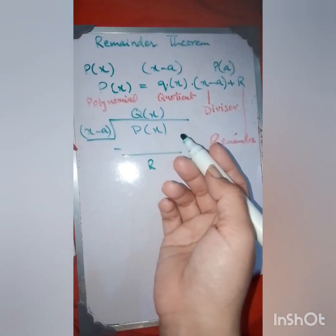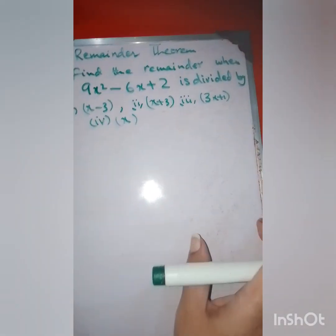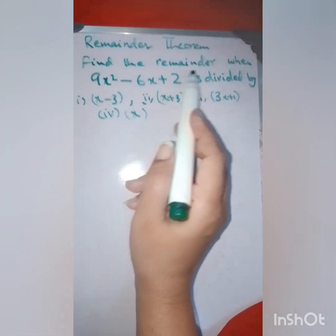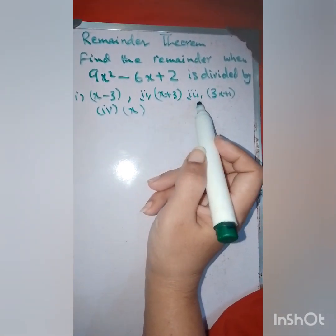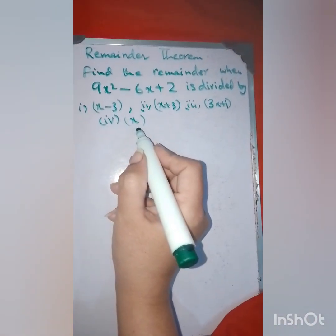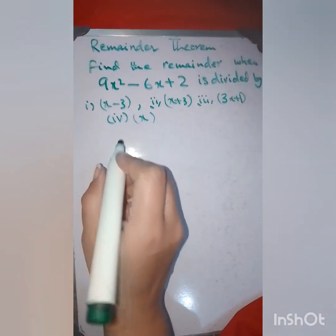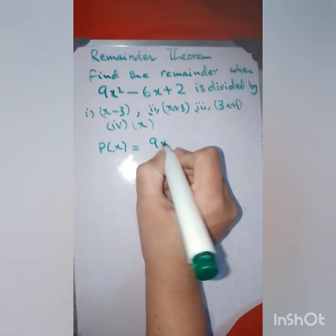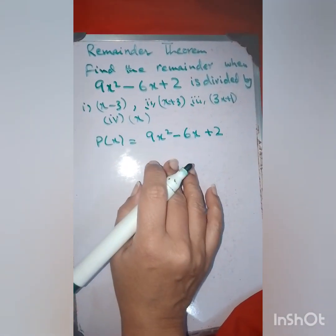Let's start. The question given is: find the remainder when the polynomial is divided by — number 1: x minus 3, number 2: x plus 3, number 3: 3x plus 1, and number 4: x. So first of all, we let p(x) = 9x² − 6x + 2. Now, when p(x) is divided by x minus 3, by the remainder theorem, the remainder will be p(3).